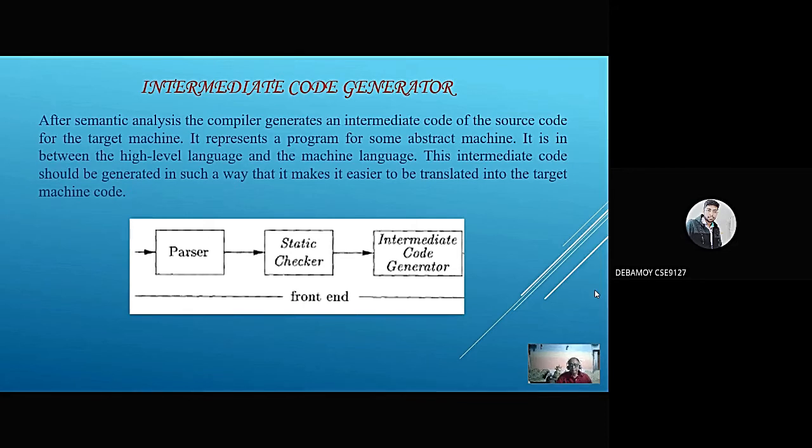Coming to the next phase of synthesis: code optimization. This phase does code optimization of the intermediate code. Optimization can be assumed as something that removes unnecessary code lines and arranges the sequence of statements in order to speed up program execution without wasting resources such as CPU and memory.